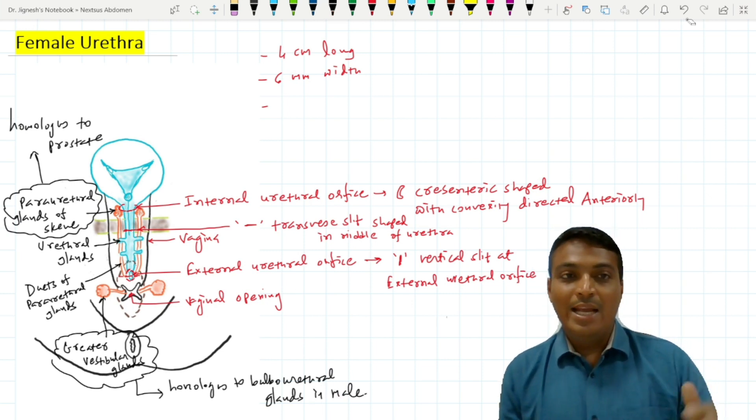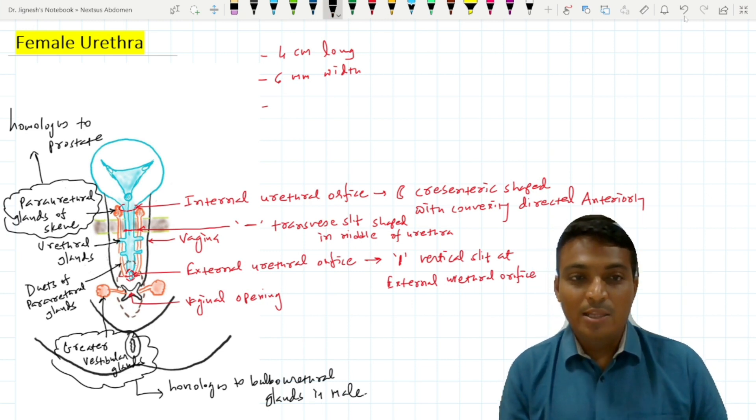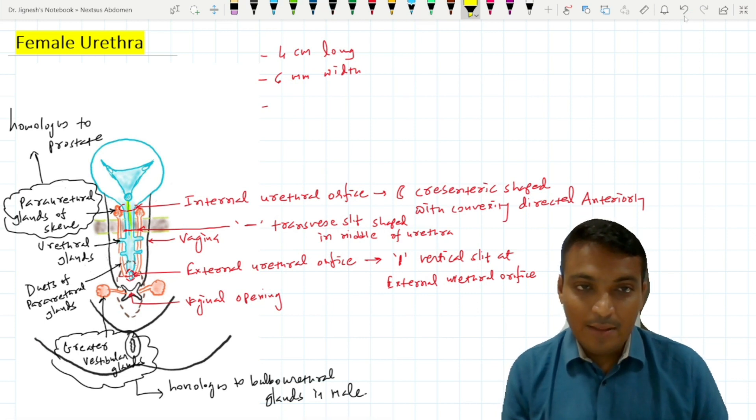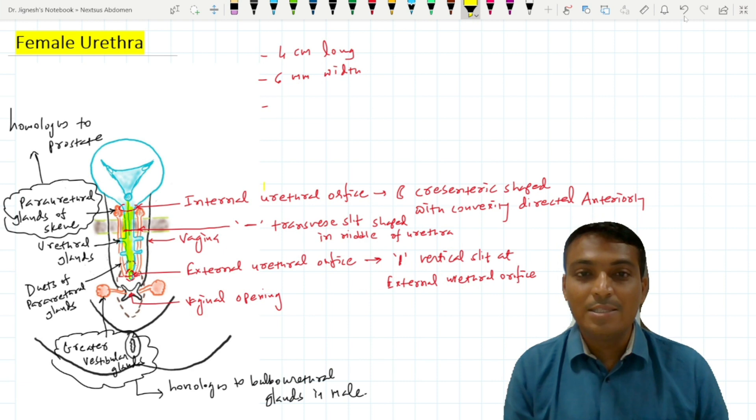The lining epithelium of the female urethra is mostly stratified squamous epithelium. However, the portion just near the internal urethral orifice is lined by transitional epithelium.